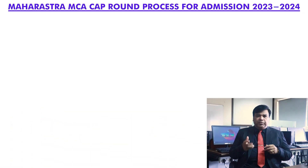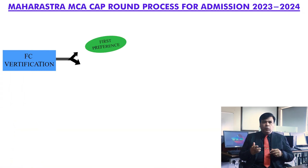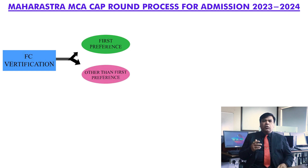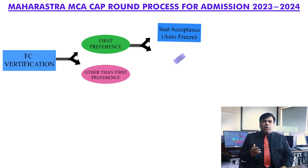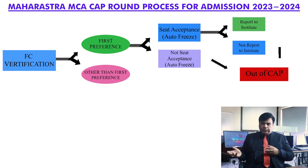If you are having good percentiles, say 97-98, then you have to put a very good college as the first preference. If that same college is allotted to you, then you can report to this college and take admission. But if you are not reporting to the first college and you do not accept the seat, then you will be out of the CAP process.